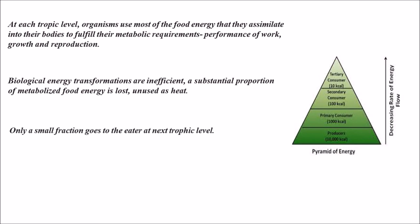Only a small fraction goes to the eater at the next trophic level. For example, if producers generate 10,000 kilocalories, primary consumers get 1,000 kilocalories, secondary consumers get 100 kilocalories, and tertiary consumers get only 10 kilocalories. This shows the decreasing rate of energy flow. Organisms are not different from man-made machines in this respect — all lose some energy at each trophic level. That's all about the pyramid of energy and ecological pyramids. Thank you.